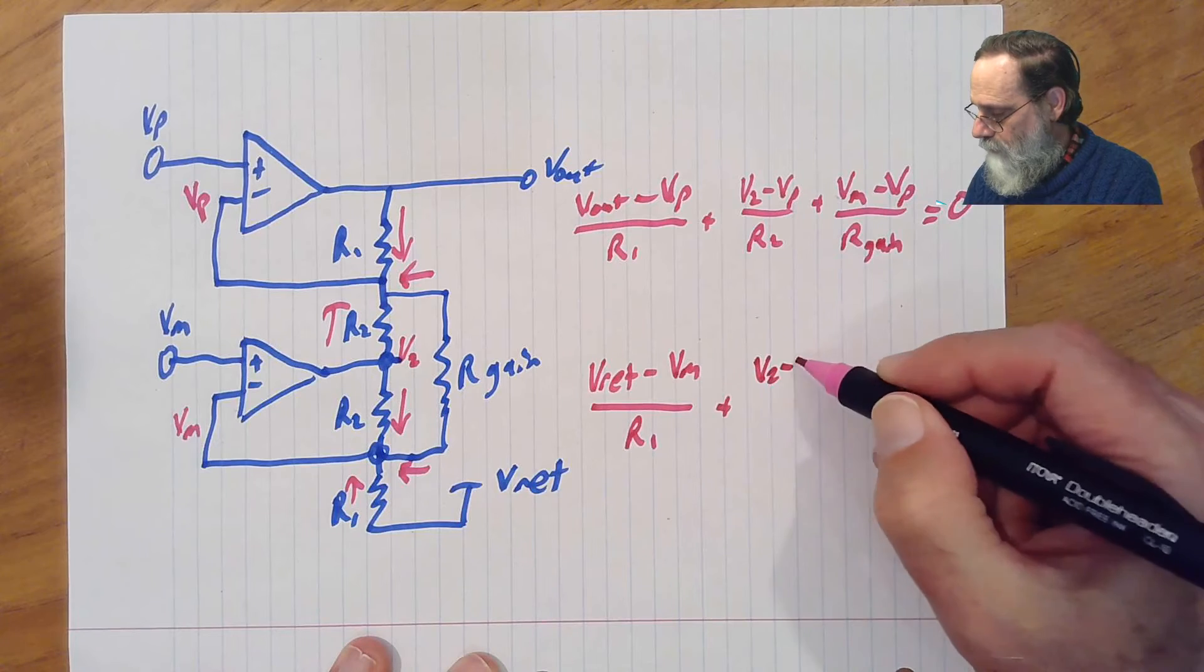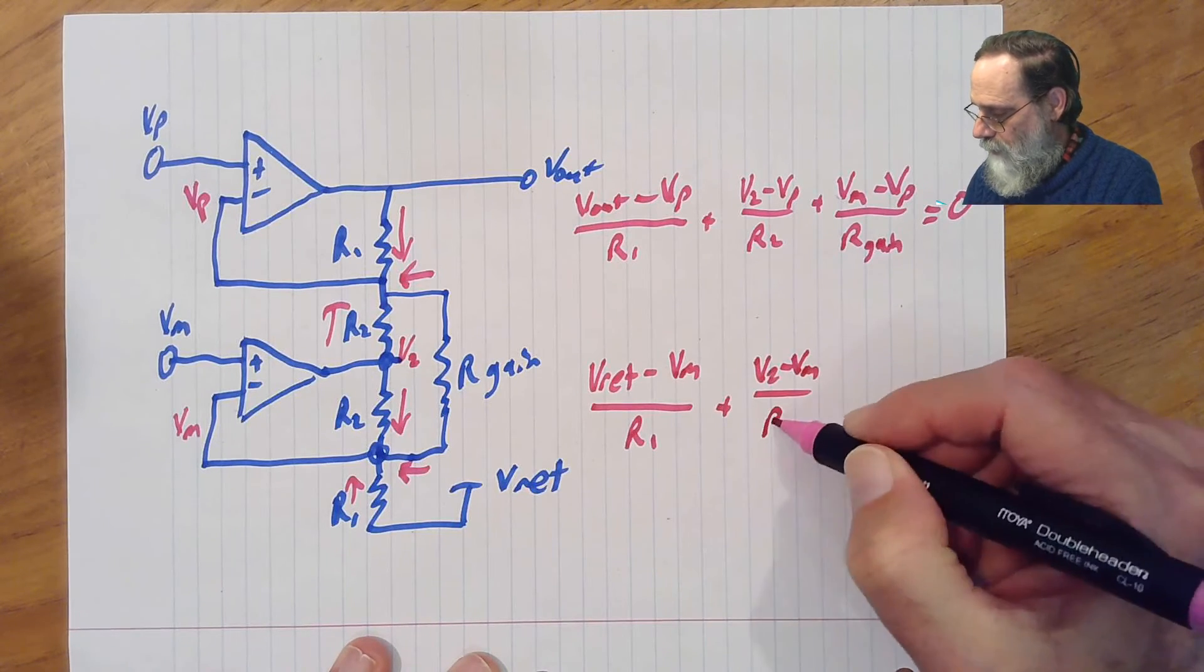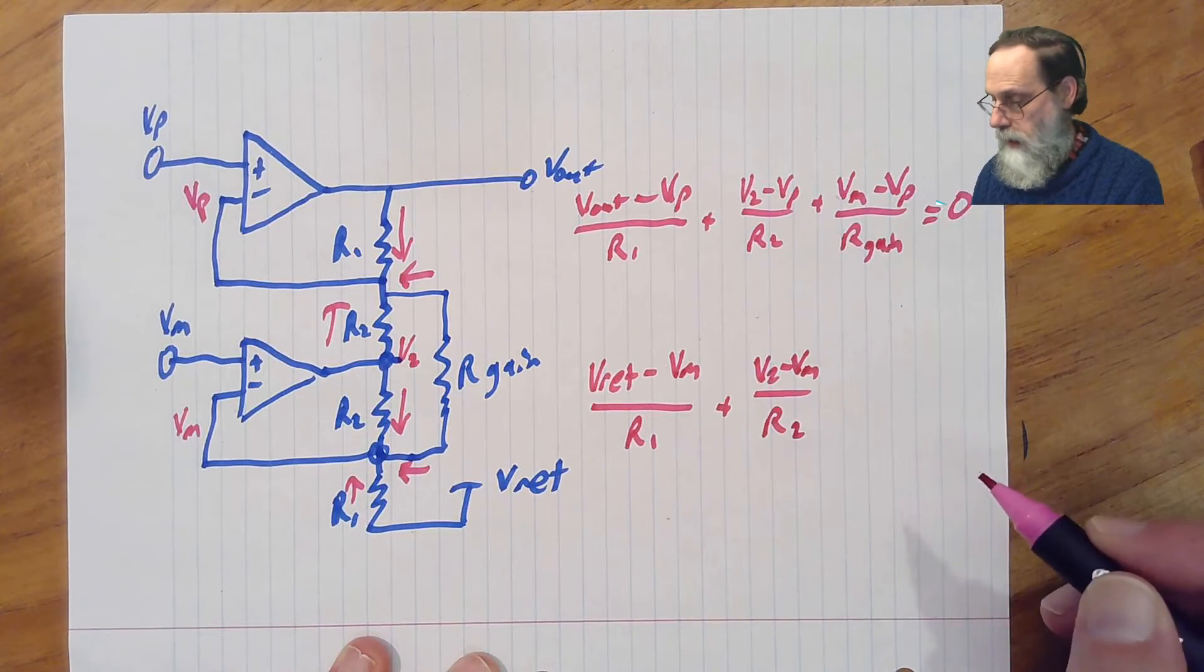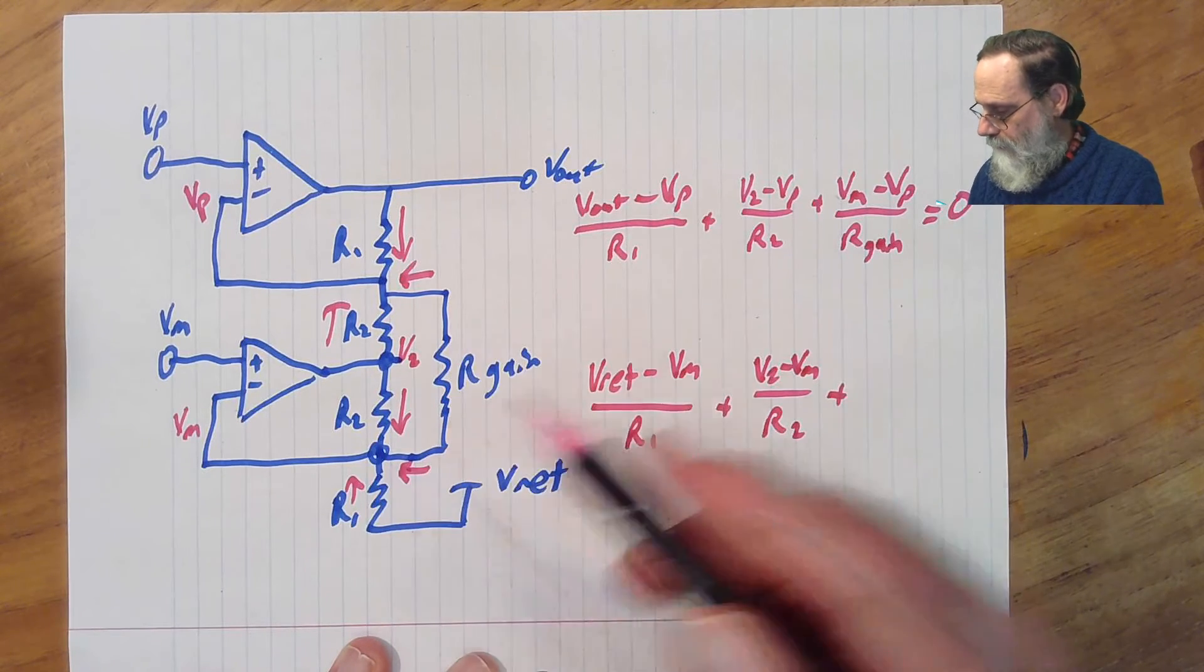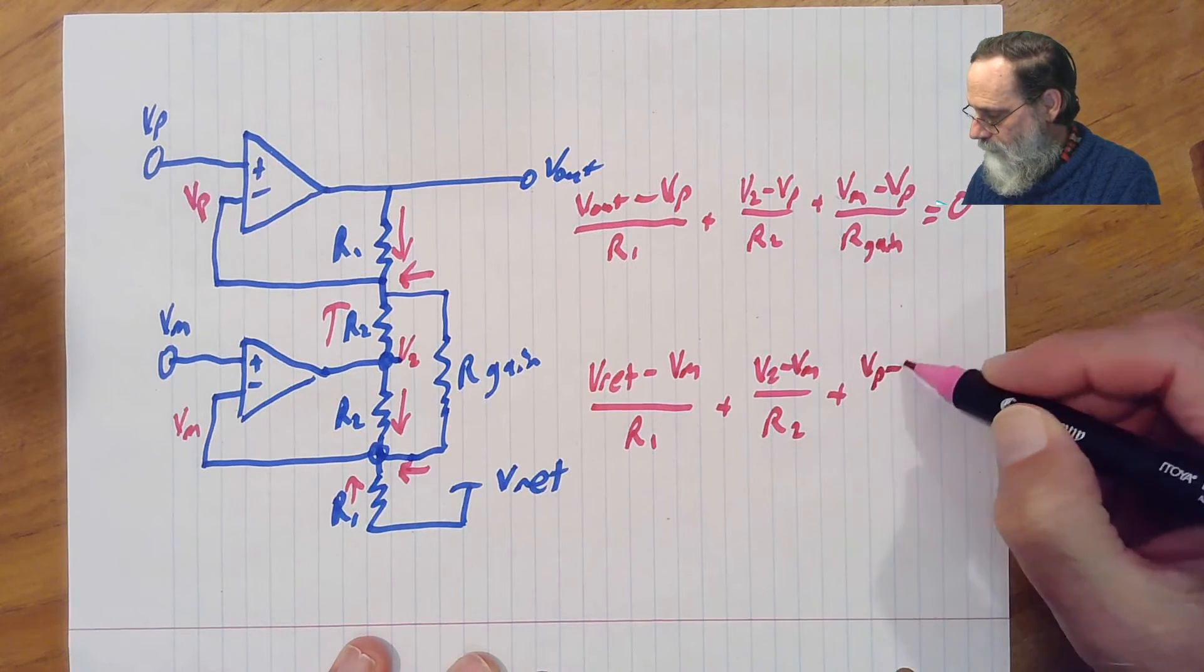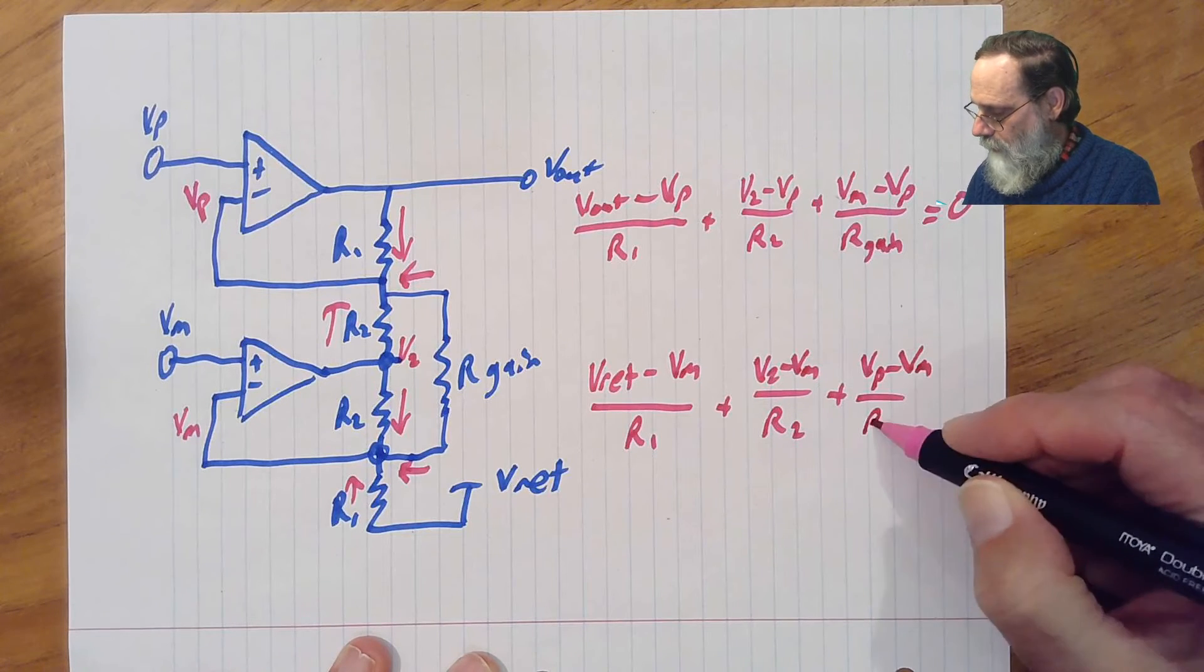so that would be v2 minus vm over r2 plus, and then we have vp minus vm over r gain.